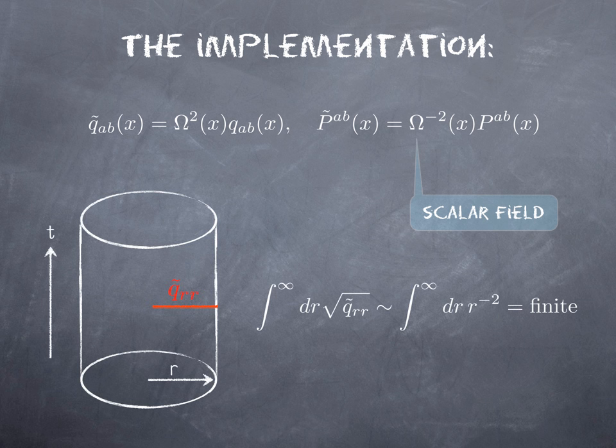Now if we just compute the proper distance again with respect to this twiddled metric, now Q_rr tilde, then we find that if we do this integral we take the square root of this Q tilde. From the conformal factor we get an additional inverse power of R, therefore the integral is dr times r to the minus 2 and the answer is clearly finite.